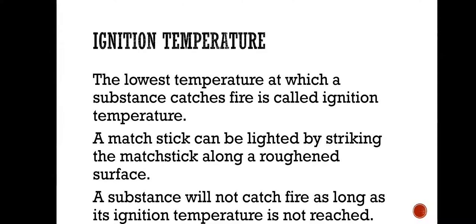A substance will not catch fire as long as its ignition temperature is not raised. For example, white phosphorus has an ignition temperature of 35 degrees Celsius. In summer season, if the temperature rises to 35 or more than 35 degrees Celsius, then what happens is this white phosphorus ignites spontaneously — it catches fire on its own because it has already attained that temperature.